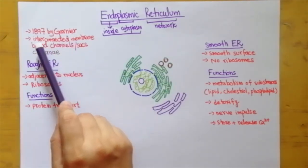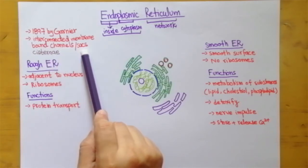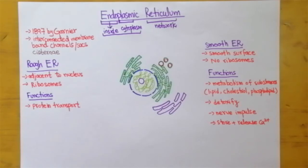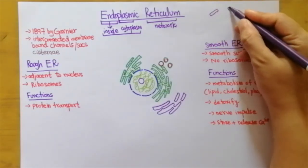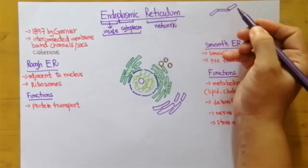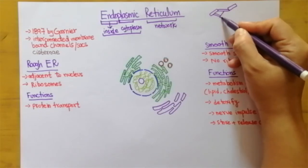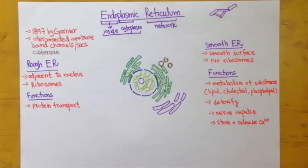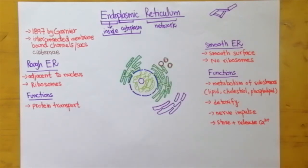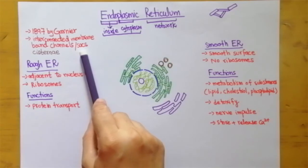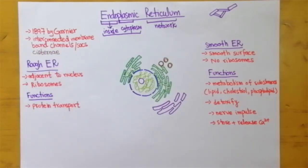It was discovered by Garnier. It is an interconnected, membrane-bounded set of channels or sacs. Interconnected means they are all connected with each other — linked, not separate. They are membrane-bounded because of the membrane present in this organelle. This organelle is only present in eukaryotic cells; prokaryotic cells do not have an endoplasmic reticulum. It is a distinguishing feature between plant and animal cells.